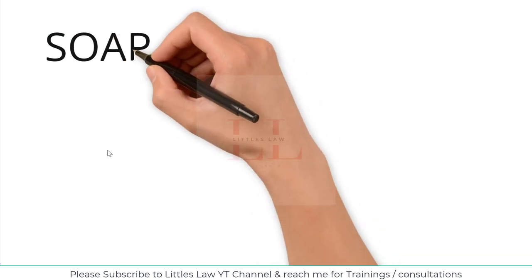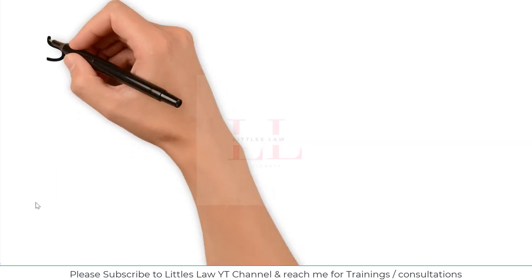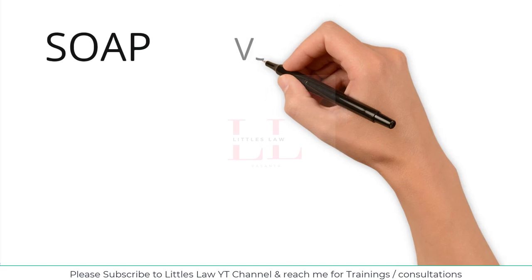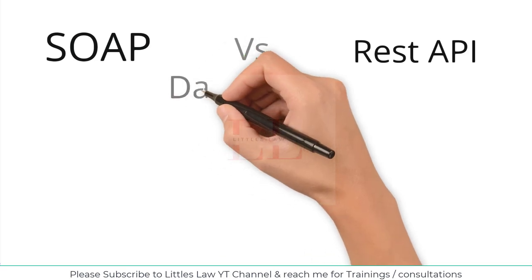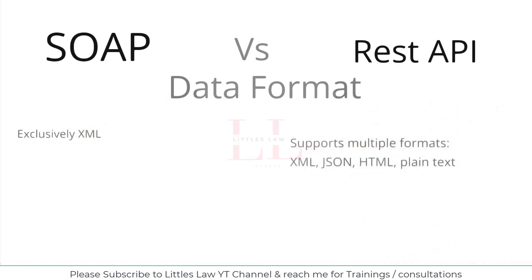The third difference between SOAP and REST API is the data format. SOAP uses XML as its message format, which includes the envelope, header, and body. XML is verbose and can lead to larger message sizes, which impacts performance — affecting network bandwidth, latency, and disk I/O — though these may seem small individually, they add up significantly.